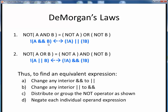A and B represent some generalized single conditional expression. To use these to find the equivalent logical expression, we would simply change any interior AND operator to an OR operator, or any OR operator to an AND operator, distribute or group the NOT operator as shown, and then negate each individual operand expression as needed.